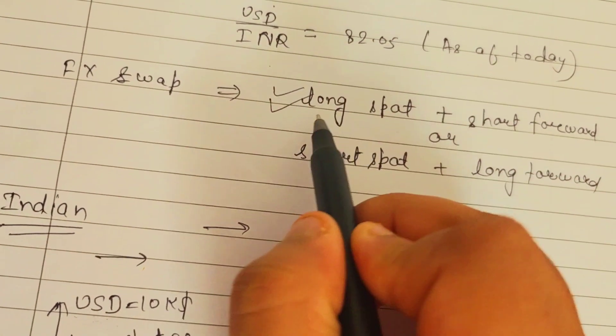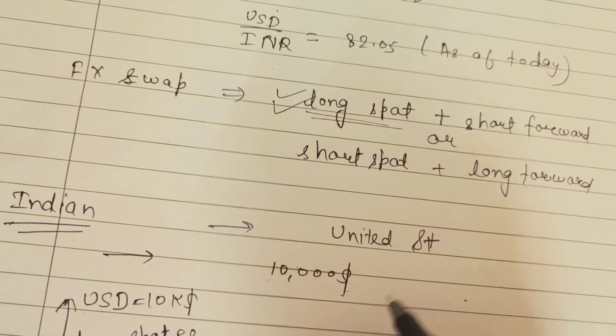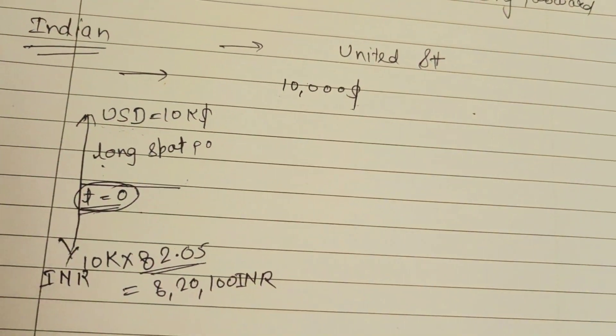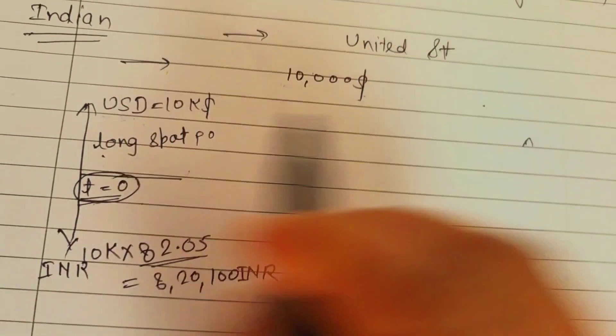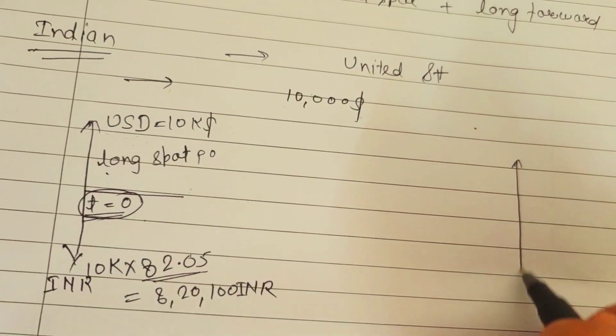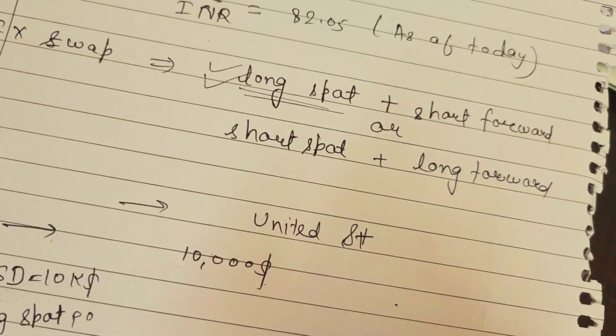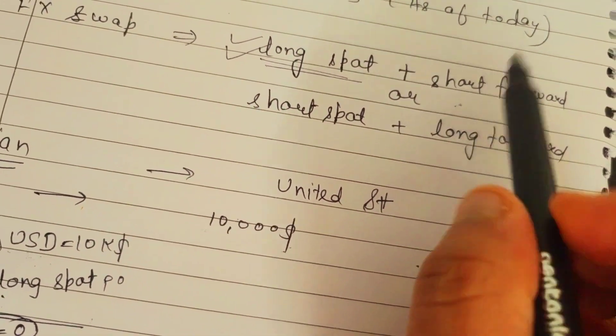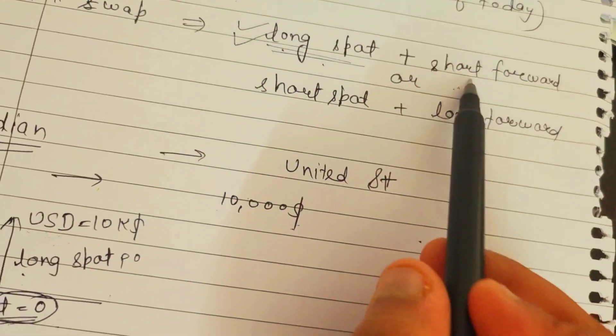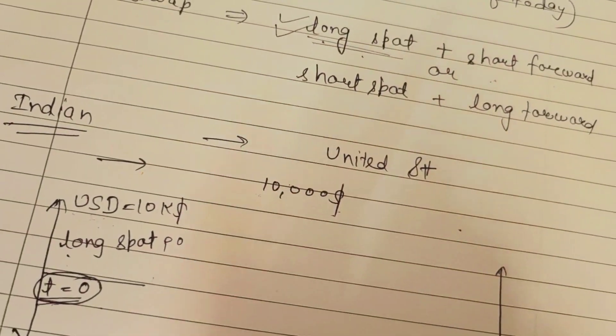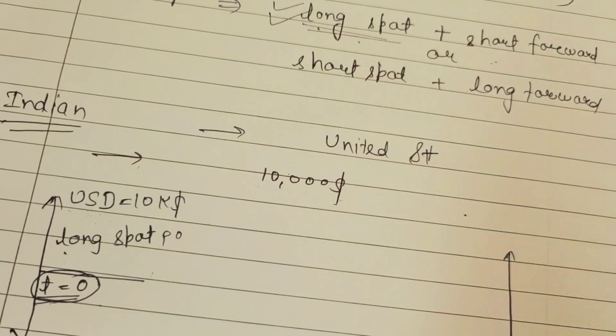The person is looking to buy 10k dollars, paying 8 lakh 20 thousand based on this spot rate as of today. The other contract that this Indian company will do is a short contract. Here they were buying USD, so now they have to do selling of USD, which will be a short contract.